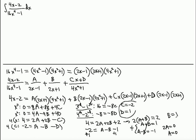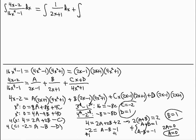We've found all our coefficients: A = 0, B = 1, C = -2, D = 1. Now we can rewrite the integral as: 0/(2x-1) + 1/(2x+1) + (-2x + 1)/(4x² + 1) dx. Since A = 0, the first term vanishes.